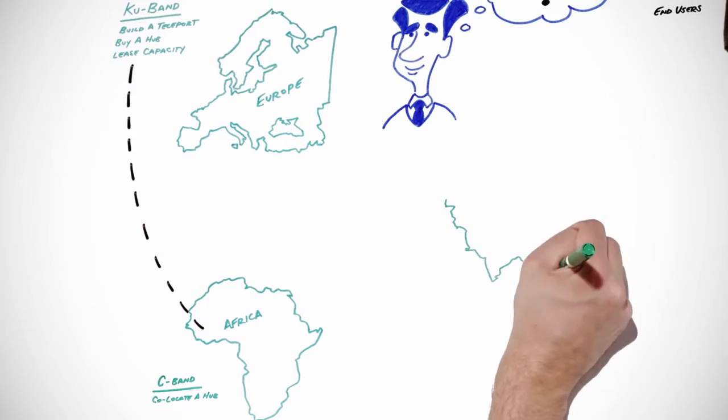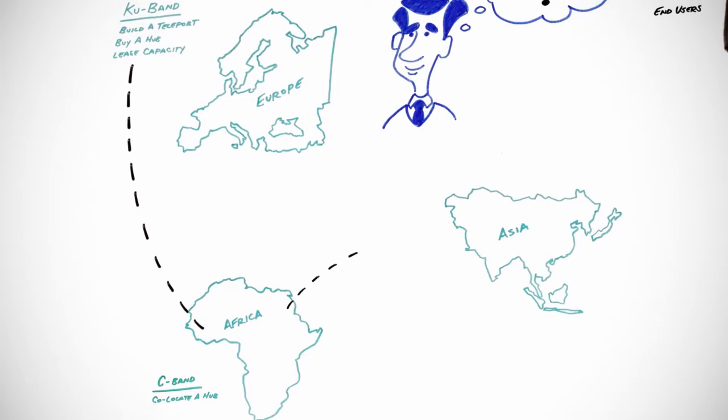Later, some of your European customers ask for bandwidth in Asia. So you decide to expand again over KU band. You determine that the best strategy is to become a virtual network operator to minimize capital investments and quickly launch a service.